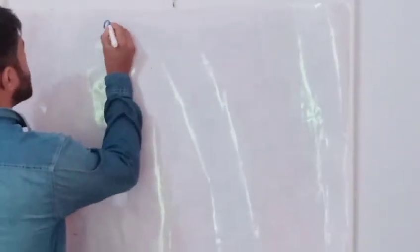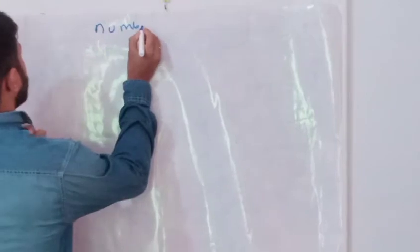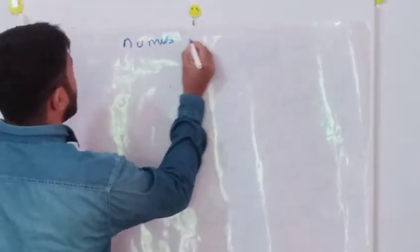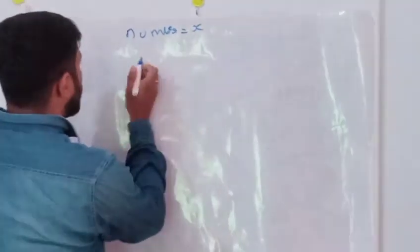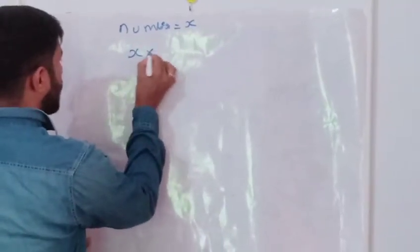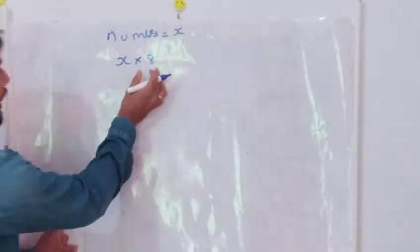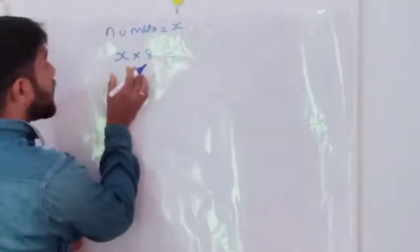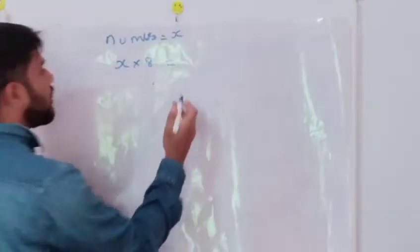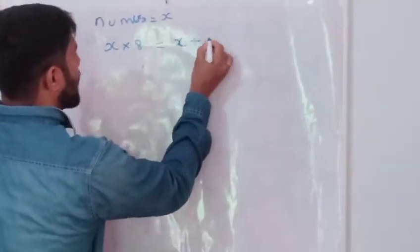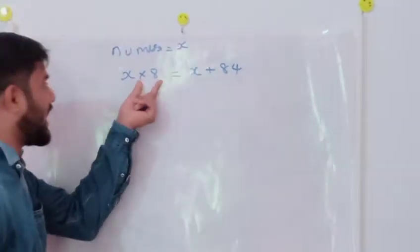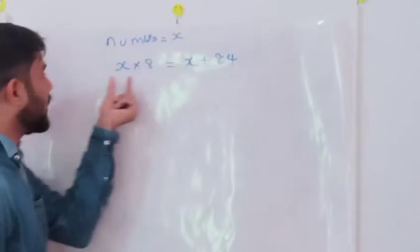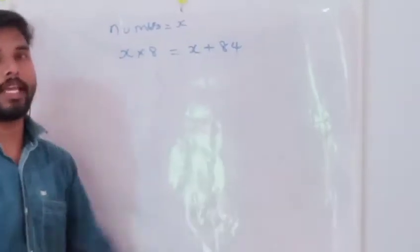We can assume that number is x. So the number is x. When we multiply x by 8, that number into 8 gives a result increased by 84 — that means the number plus 84. When we multiply by 8, the result will be the number plus 84. That is the question.